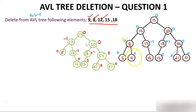Now delete 12. Node 12 is a node having two children. When you delete a node having two children, its position is taken by either its in-order successor or its in-order predecessor.